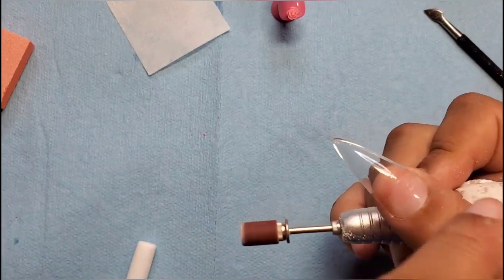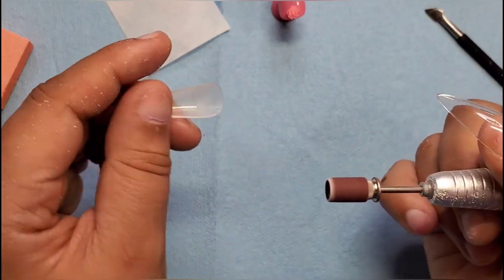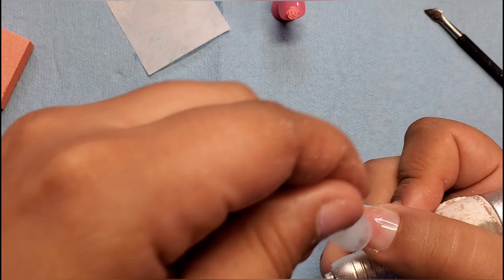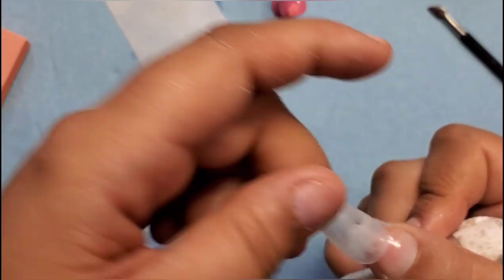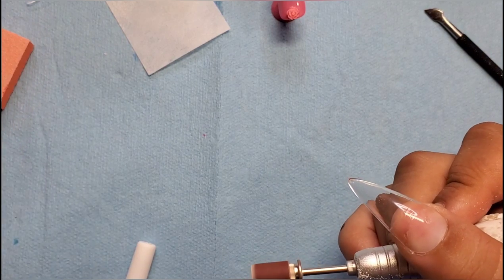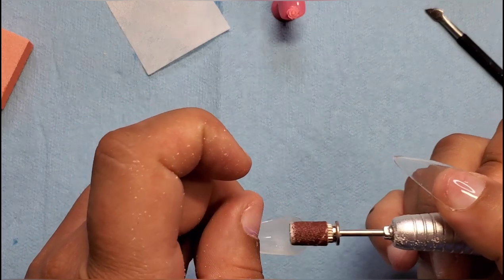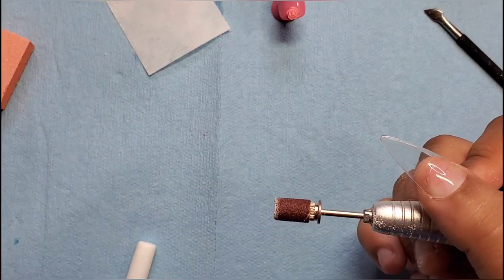If you have one of these though, after you've pre-buffed your natural nail, you could go in and roughen this up too. Then wipe the dust out, go in with the glue and put this on, and you'll probably get even more extra adhesion on there.